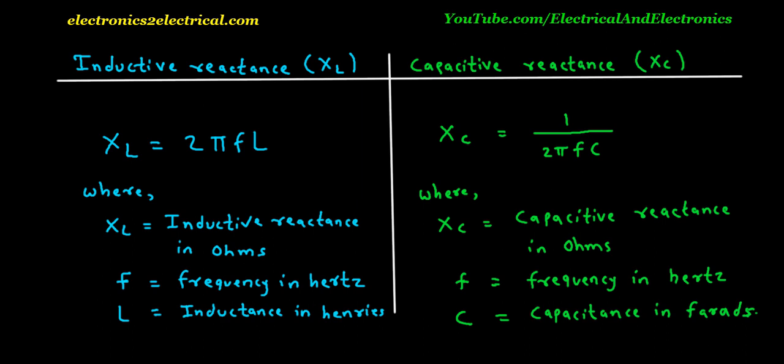Similarly, the formula for capacitive reactance XC is 1 upon 2 pi F C, where XC is the capacitive reactance in ohms, F is frequency in hertz, and C is capacitance in farads. Here, the capacitive reactance XC is inversely proportional to frequency F.